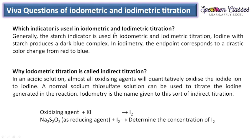Five questions: Which indicator is used in iodometric and iodimetric titration? In iodometric titration, starch is used as an indicator. The color change is from purple or dark blue to colorless. In iodimetric titration, since iodine is used as the titrant it has a brown color; we use starch solution with the analyte, so the color change is from brown to blue. The reason iodometric titration is called an indirect titration has already been explained, and here is the reaction.